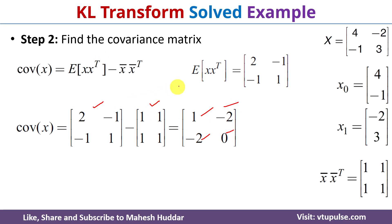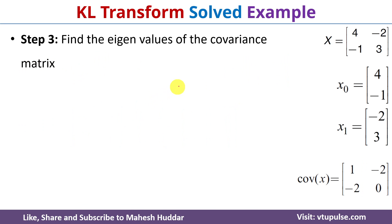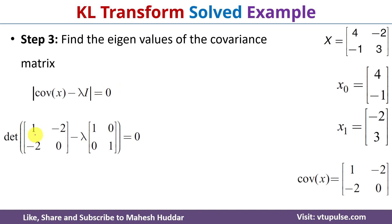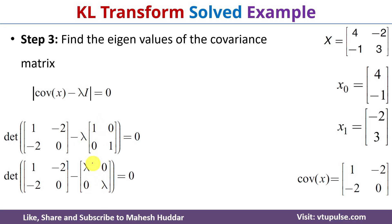Once we find the covariance matrix, step 3 is to find the eigenvalues. To find the eigenvalues we use the formula: determinant of (covariance of x minus lambda times I) equals 0, where I is the identity matrix. The covariance of x is [[1,-2],[-2,0]] and I is the 2x2 identity matrix. Multiplying lambda with the identity matrix gives [[lambda,0],[0,lambda]], and subtracting gives [[1-lambda, -2],[-2, -lambda]]. Now we need to find the determinant of this matrix.